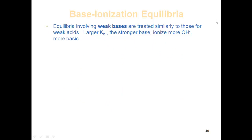Equilibria involving weak bases are treated very similar to those of weak acids. Remember, we looked at the Ka value to decide what's a stronger acid — we can do that with a base as well. The larger the Kb, the more it's going to ionize, meaning the more it's going to produce OH minus ions, which means it's going to be a stronger base. So the larger the Kb, the more it ionizes, the more it produces OH minuses, and the stronger the base. I can compare one species to another by looking at the Kb — the one with the larger Kb will be the stronger base.